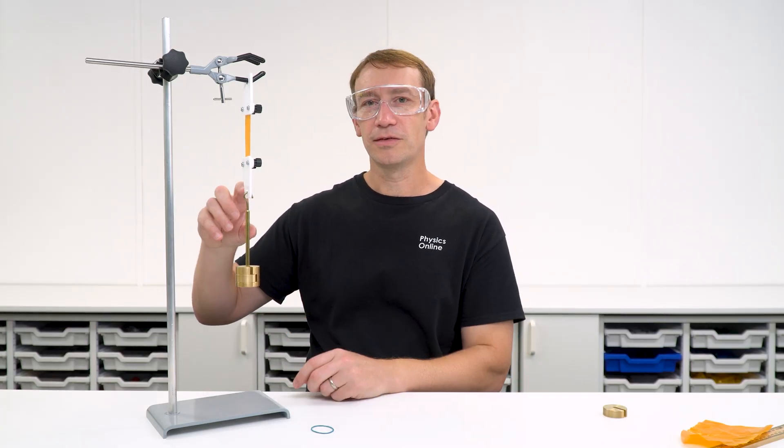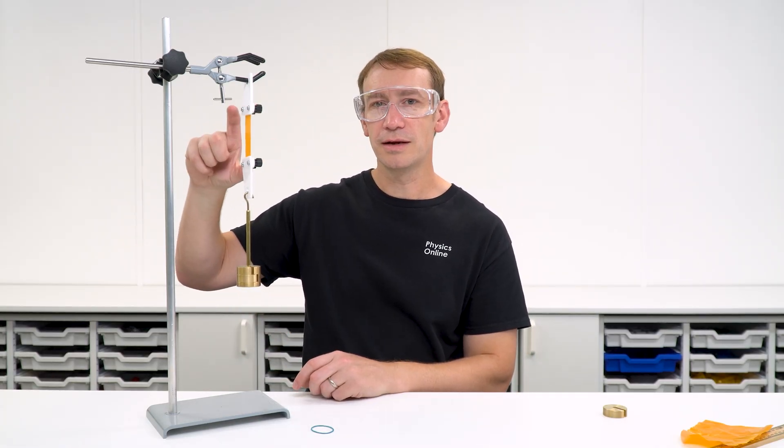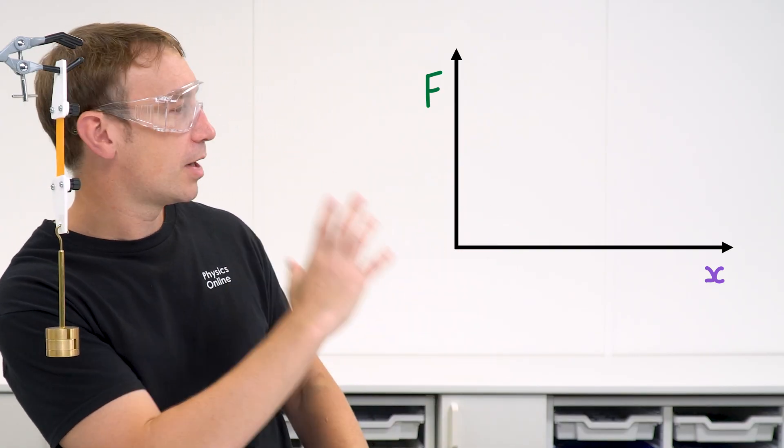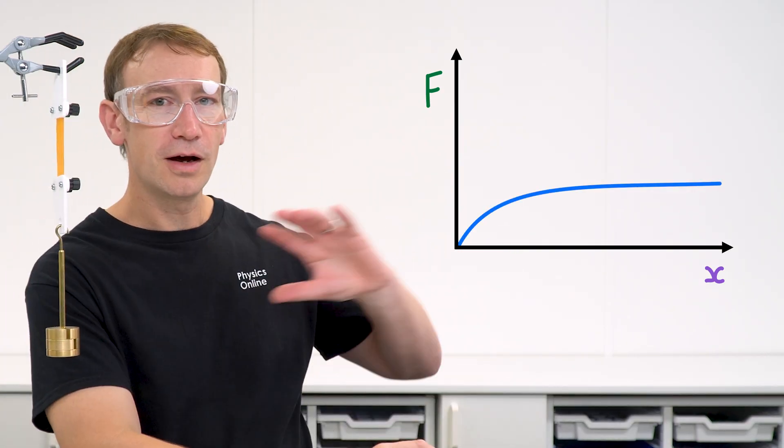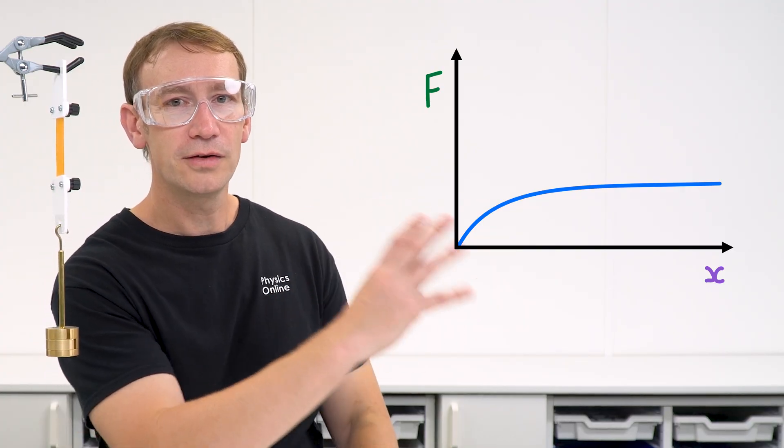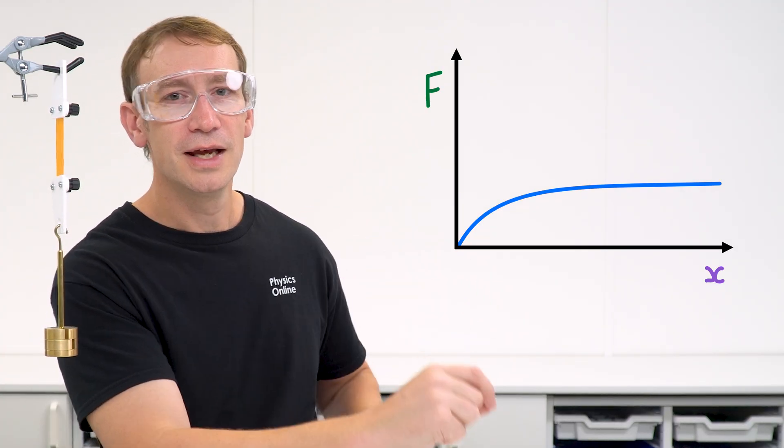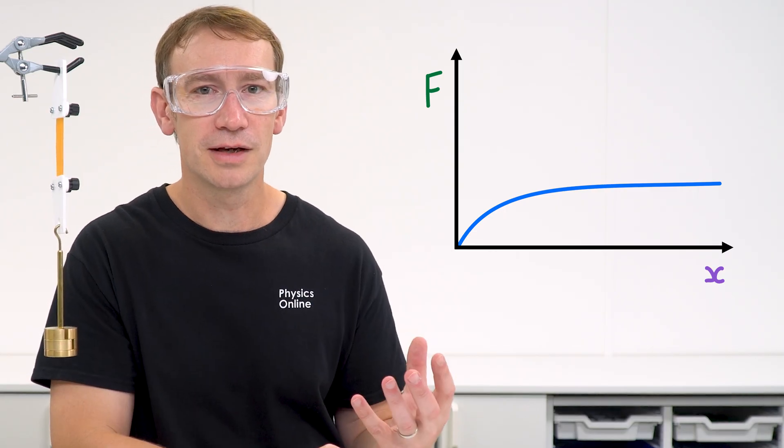Now if we were to continue doing this and we were to look at the total length, take off the initial length, we might find a graph that looks much more like this. We have this large region where we have a large extension even though a big force isn't being applied onto it. And this is actually going to be some plastic deformation.